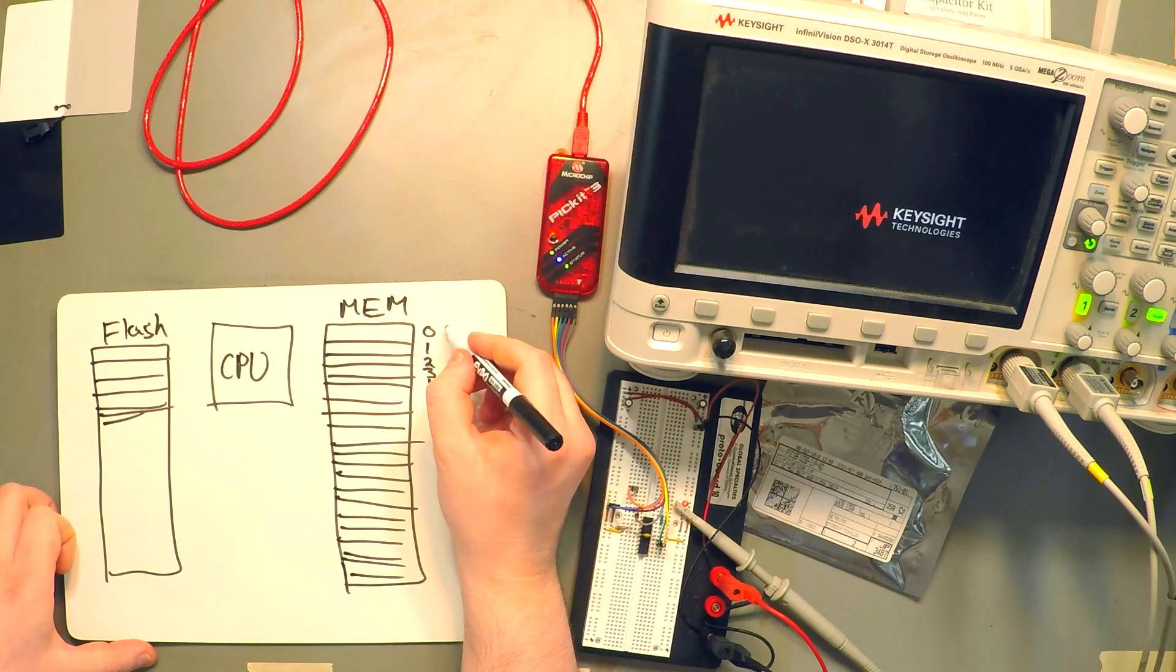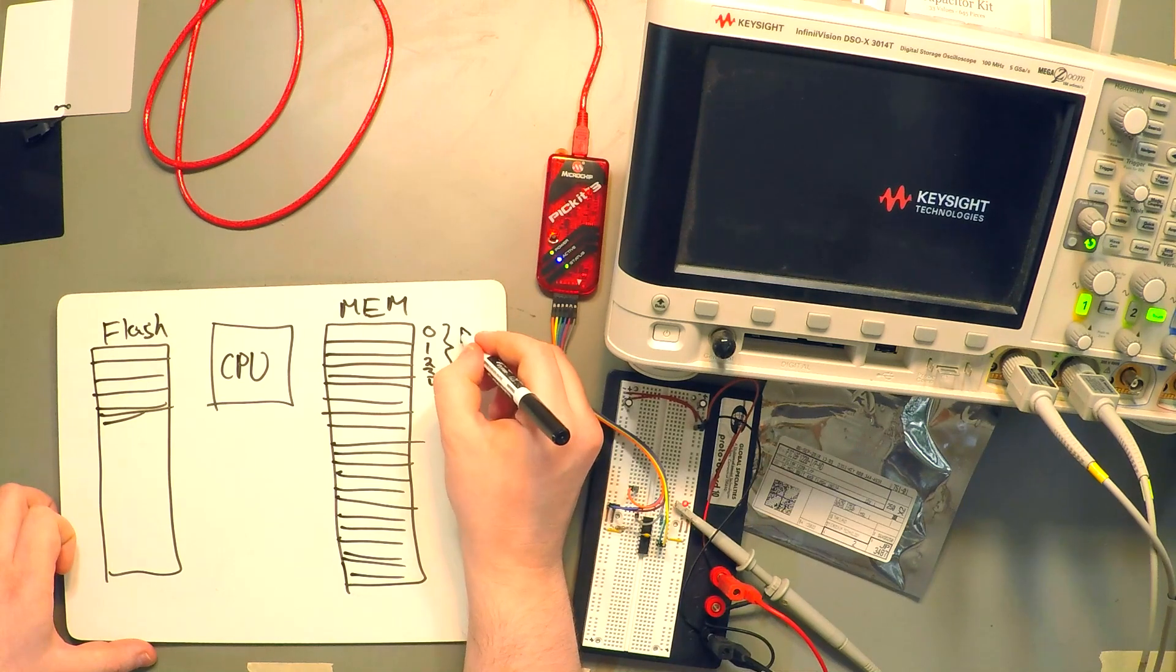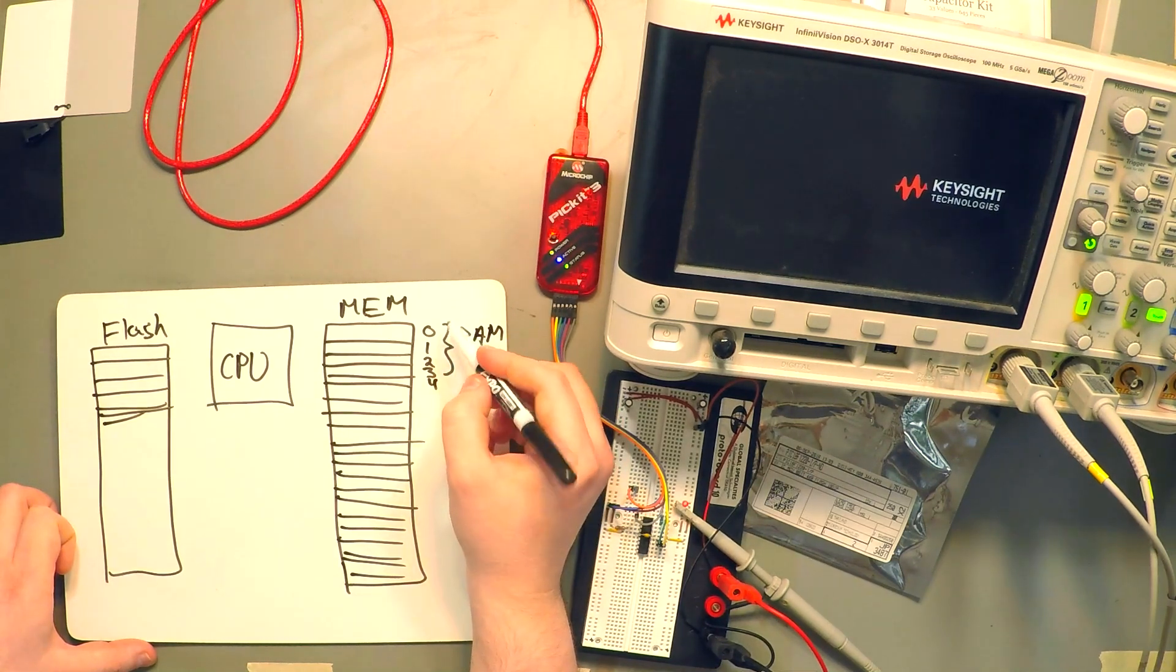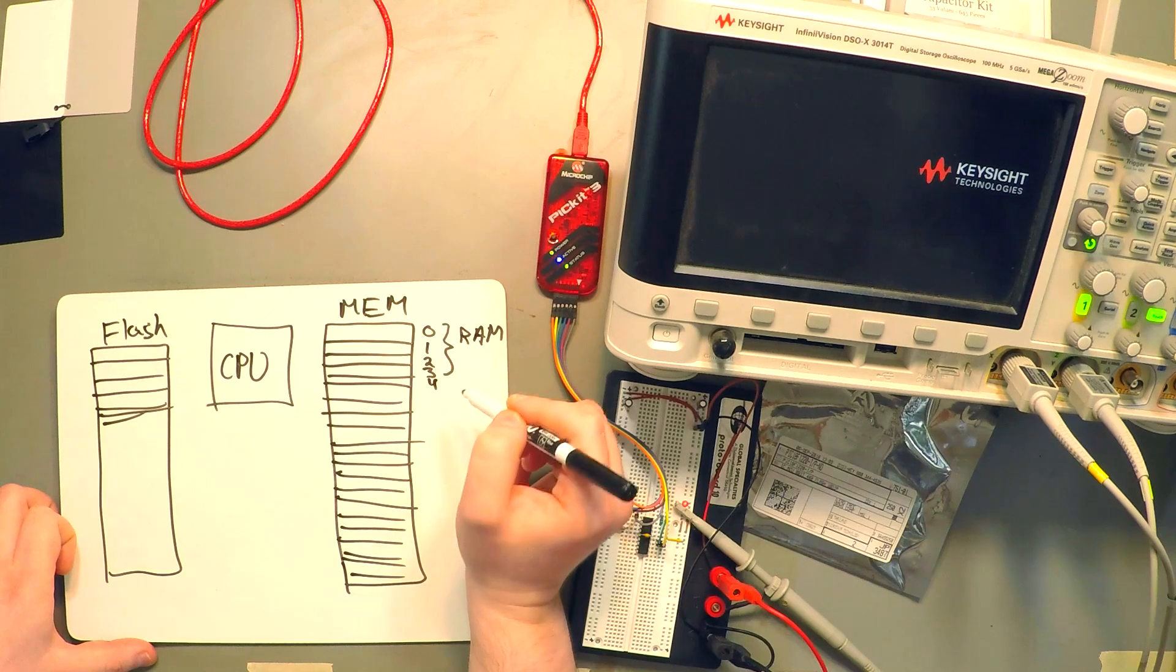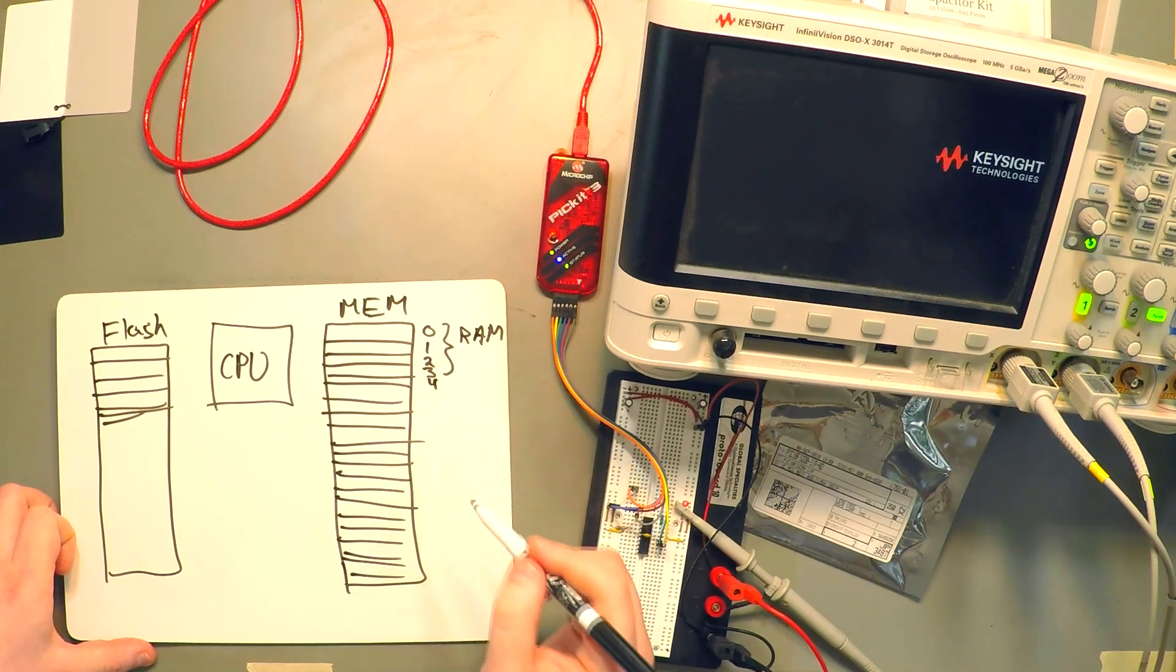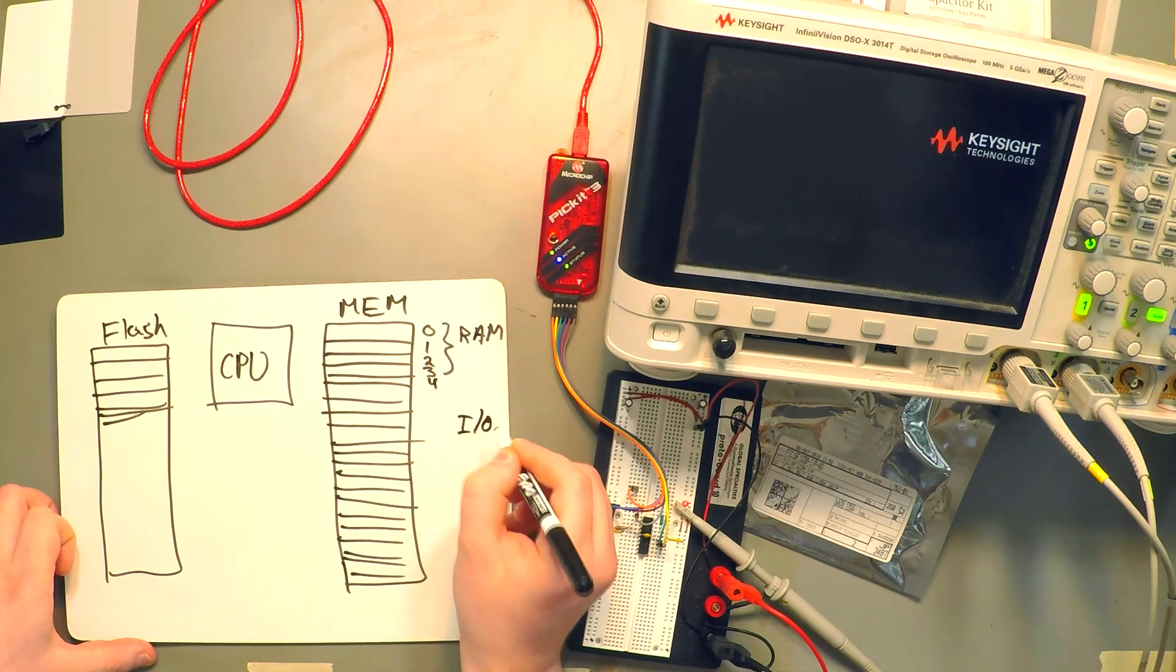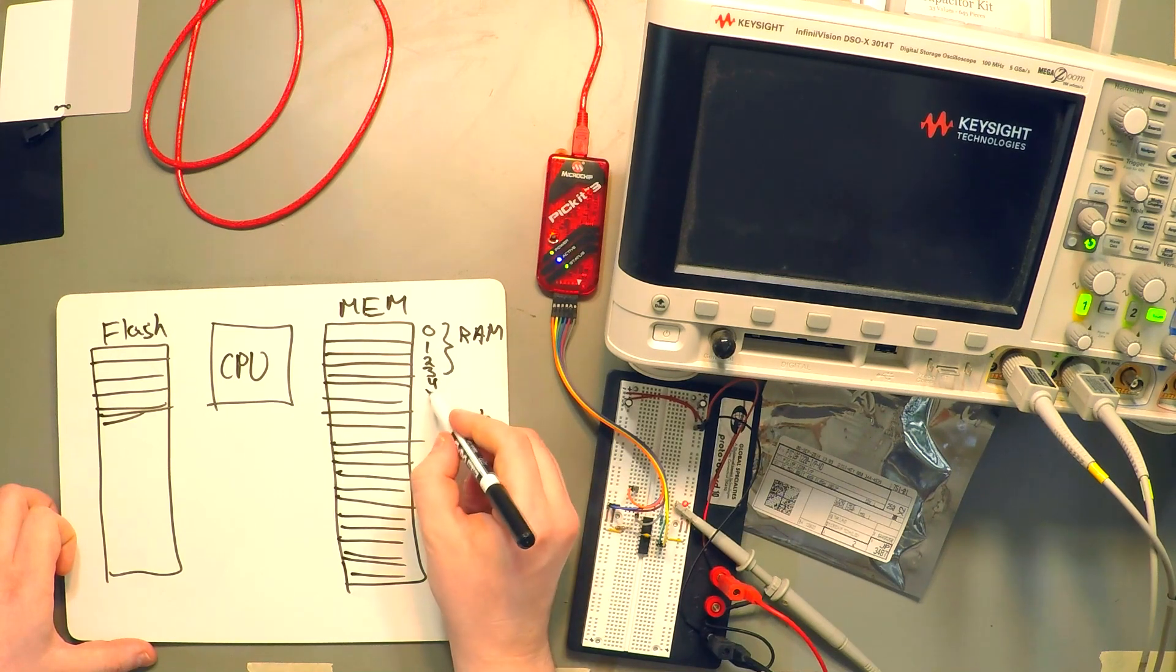And then different address ranges in the memory are going to represent different components on the microcontroller. So for example, the random access memory. So here, RAM is going to have an address range of 0 all the way up to 3 including 3.